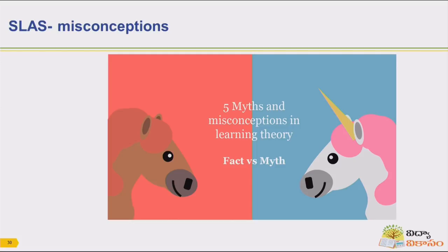The unicorn never existed, I believe. So what is the difference? The unicorn is our imagination — kind of like a myth, it is not really existing. Whereas a horse is real. So that is the key distinction with regard to misconceptions.